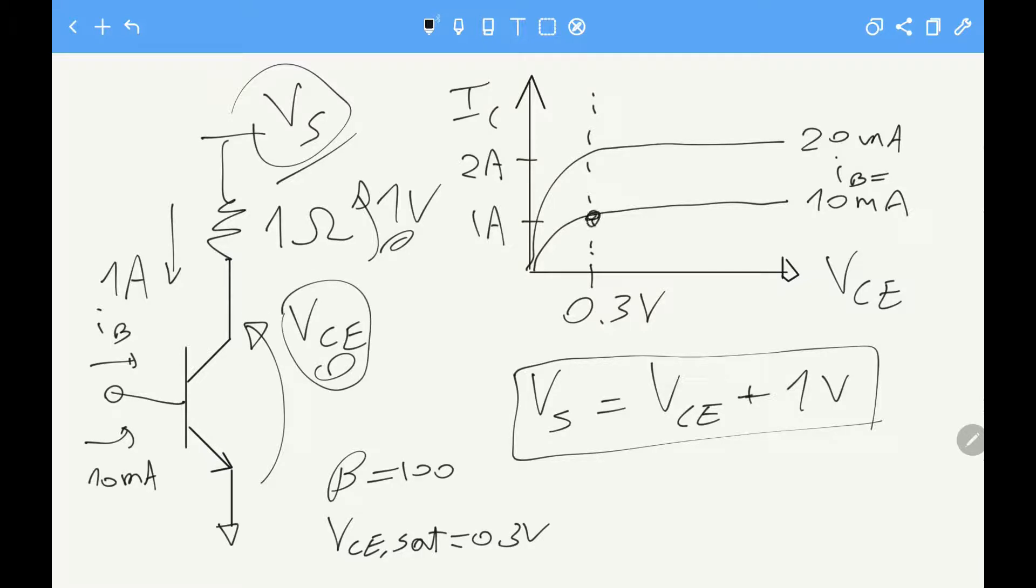So that means what should we take as VCE? Because on the one hand we can take 0.3 volts, because that would give us 1 amp current through the resistor. But we can also bias it here. Because if we bias it here, let's say at 1 volt, we get the same current going through the resistor and the light bulb is still working as it should. So where should we bias it? And of course the answer will be we have to bias it here.